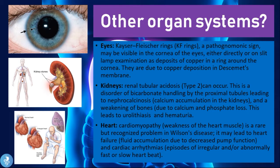The eyes display a prominent feature: Kaiser-Fleischer rings (KF rings), which are a pathognomonic sign visible in the cornea either directly or on slit-lamp examination. These appear as deposits of copper in a ring around the cornea, due to copper deposition in Descemet's membrane. This ring of copper is one of the key diagnostic features of Wilson's disease.